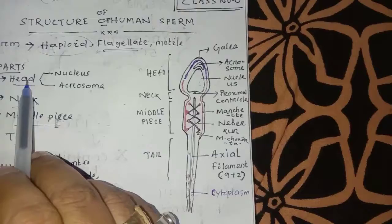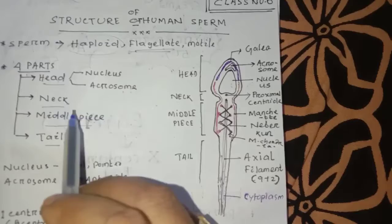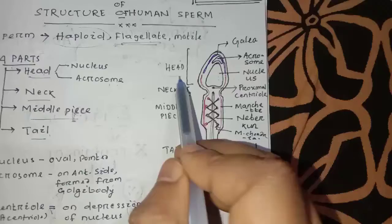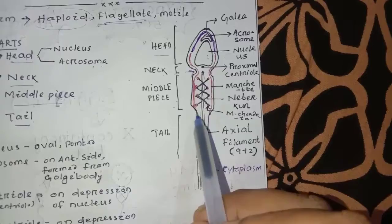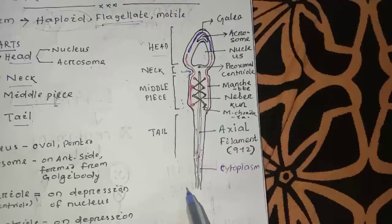This is the nucleus. This is the neck region. The next part is also the neck region, followed by the middle piece. The head part consists of the nucleus and acrosome.